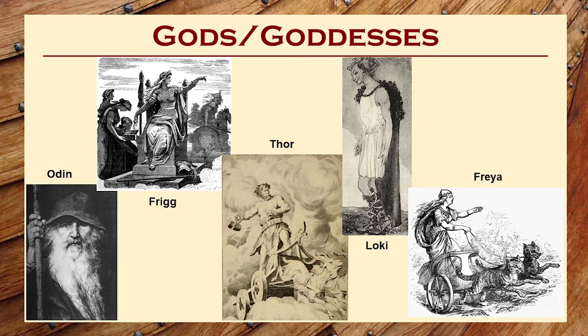Frigg. She was queen of the gods and was associated with knowledge, marriage, prophecy, and the household. Thor. He was the son of Odin. He was the god of thunder and lightning and he was known as the strongest of the gods. He wielded a hammer called Mjolnir which always hit its target when he threw it and it would always return to him. He often fought giants in order to protect the gods and he rode in a chariot pulled by goats.